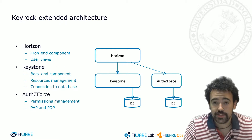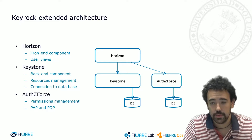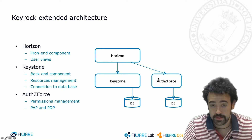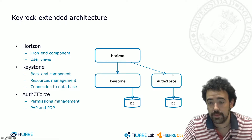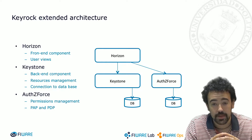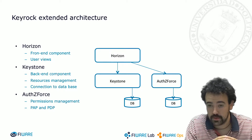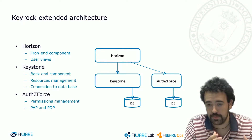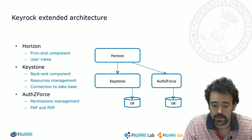In this picture we can see an extended architecture of Keyrock when we configure the connection to the authorization PDP component — the AuthZForce component — in charge of managing permissions. This component is the PAP and PDP component of the authorization part of security in FIWARE, in charge of policies and also of taking decisions about which users are allowed to perform specific actions on FIWARE resources. To add persistence to the permissions resource, this component is also connected with a database.